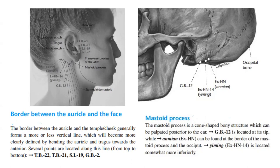Next, we have the mastoid process. The mastoid process is a cone-shaped bony structure which can be palpated posterior to the ear. Point GB12 is located at its tip. The extra point Anion can be found at the border of the mastoid process and the occiput. Acupuncture point EXHN-14, or Yi Ming, is located somewhat more inferiorly.